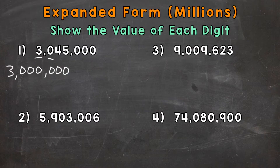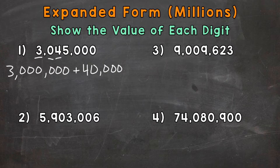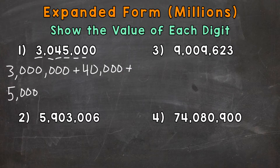Moving to the right, we have a 4 in the ten thousands place, so the value of that 4 is 40,000, because it's sitting in the ten thousands place. Then we have a 5 in the thousands place, so the value of that 5 is 5,000. Then we have a zero in the hundreds, a zero in the tens, and a zero in the ones. So to recap: the value of the 3 was 3 million, the value of the 4 was 40,000, and the value of the 5 was 5,000.